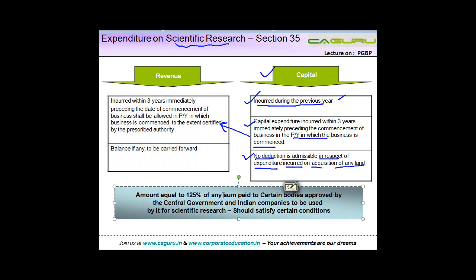Amount equal to 125% of any sum paid to certain bodies approved by the Central Government and Indian companies to be used by it for scientific research is also allowed as a deduction. So if you incur 100, instead of 100 you get a deduction of 125. What are these bodies? The list of that is there in a separate video that you can refer. However, there are certain conditions which have to be satisfied that you must refer.